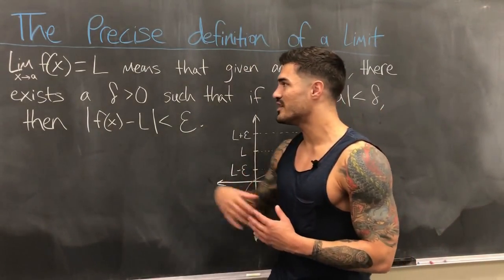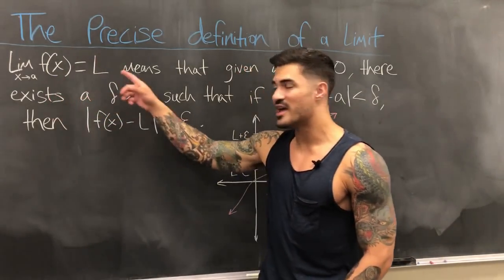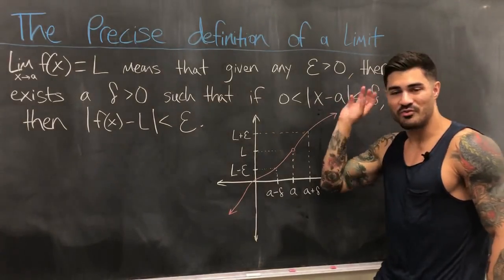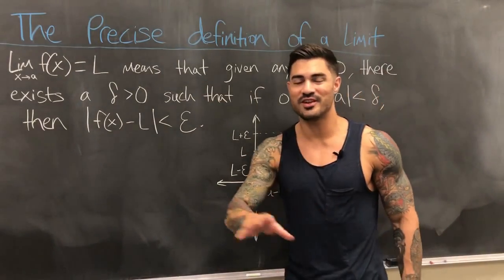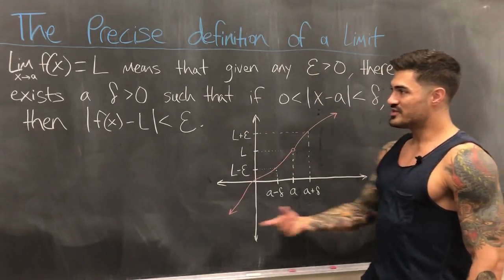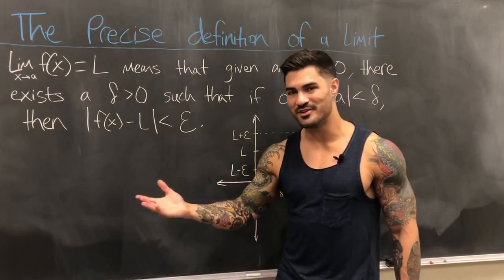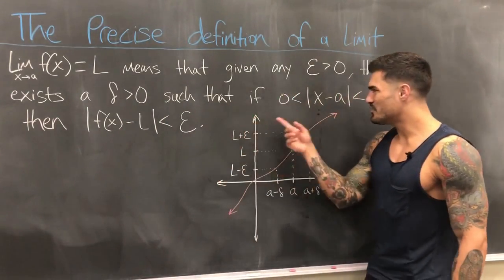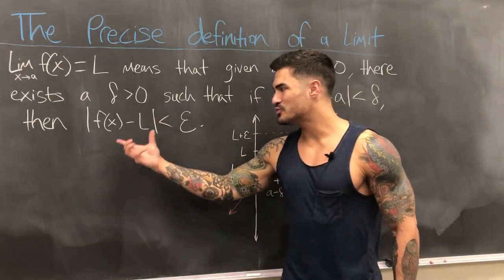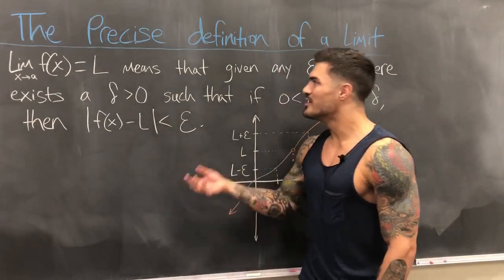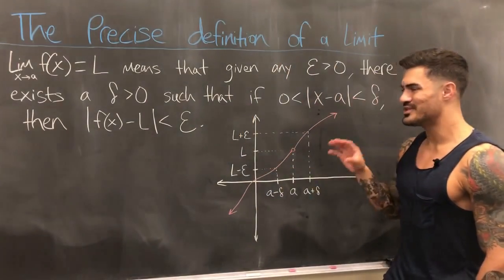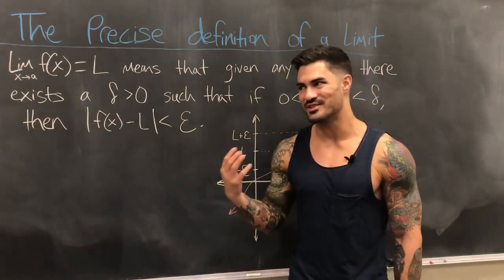The precise definition says that the limit of a function as X approaches a equals L means that given any epsilon greater than zero — epsilon is just a real number, don't panic — there exists a delta greater than zero, also just a real number, such that if zero is less than the absolute value of X minus a is less than delta, then the absolute value of f(x) minus L is less than epsilon. When first looking at this it just looks like Greek letters and crazy inequalities.